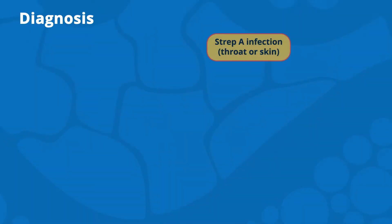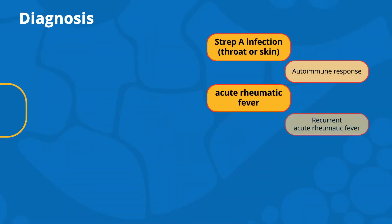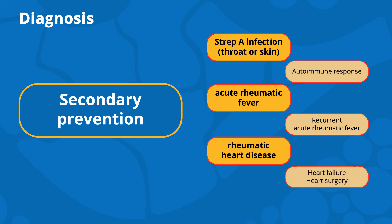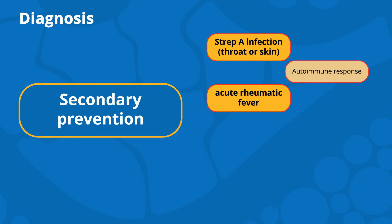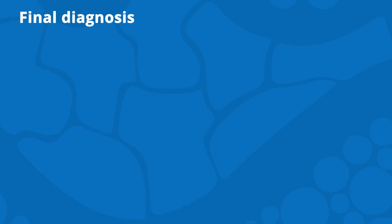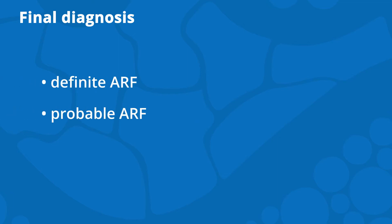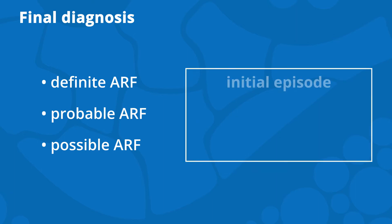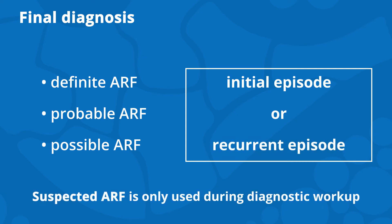A prompt diagnosis of ARF is critical so that secondary prophylaxis can be commenced early to prevent further damage to the heart valves. For each episode, a final diagnosis should be reached and specified as definite ARF, probable ARF or possible ARF, and documented as an initial known episode or a recurrent episode. Suspected ARF is a term used until the diagnosis is confirmed or ruled out.